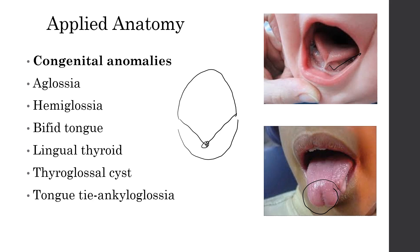Sometimes the tongue is fixed to the floor of the mouth and that is called tongue tie or ankyloglossia. This tongue can be released by a small surgery. If the tongue is fixed in this way, the child may not be able to talk properly.